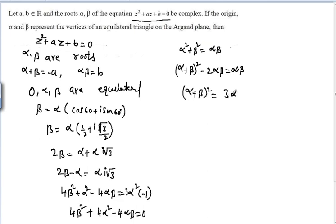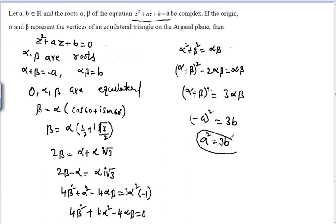Using the identity α² + β² = (α + β)² - 2αβ = αβ, we get (α + β)² = 3αβ. Substituting, (-a)² = 3b, so a² = 3b. This is the condition for the given vertices to form an equilateral triangle in the Argand plane.